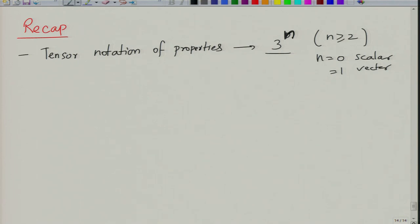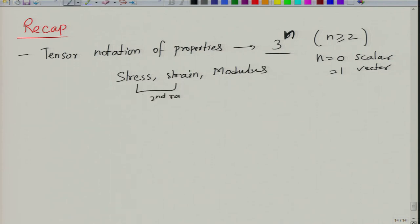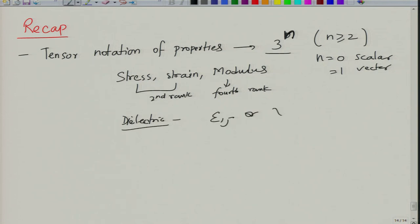A tensor will have 9 or more components theoretically speaking. As a result, properties such as stress, strain, and modulus are all tensors. Stress and strain are second rank tensors and modulus is a fourth rank tensor. Similarly, we looked at dielectric properties: epsilon_ij is permittivity and chi_ij is susceptibility — both are second rank tensors — while polarization and electric field are vectors.